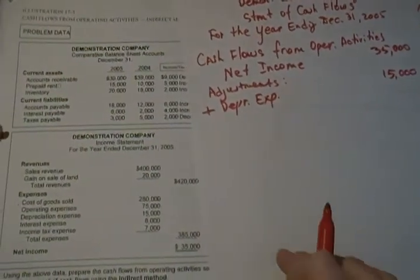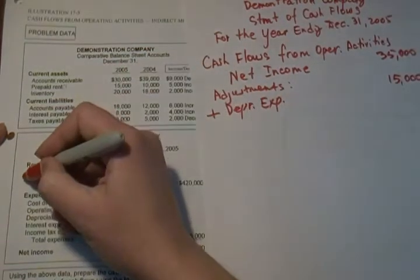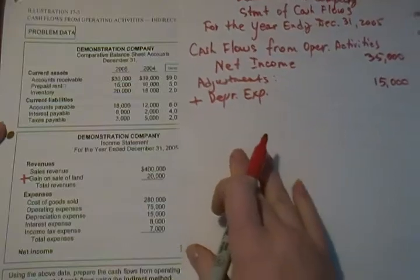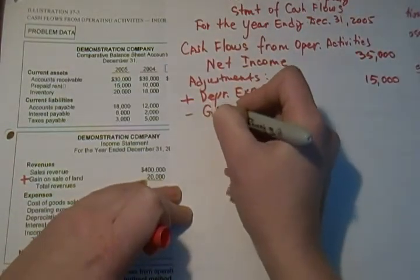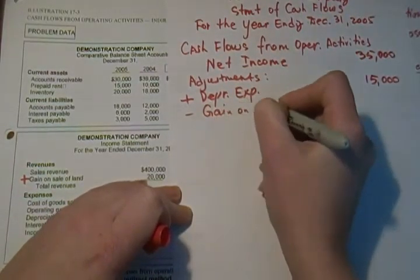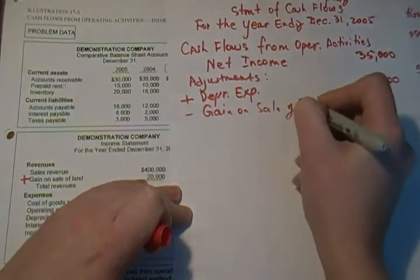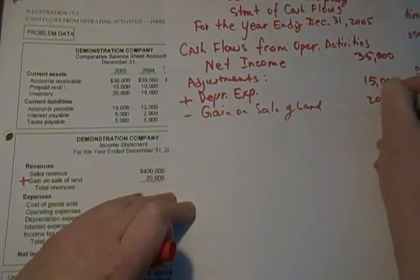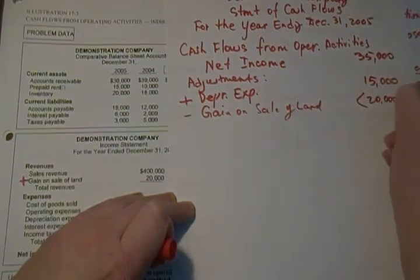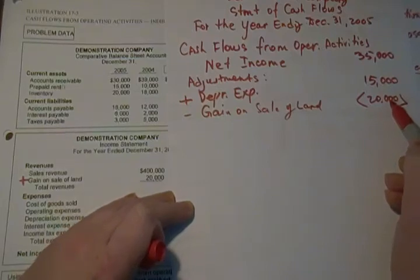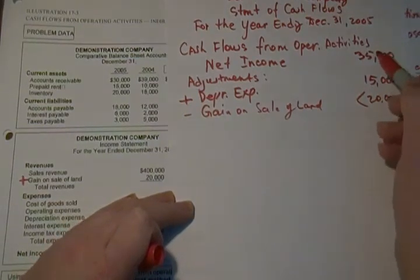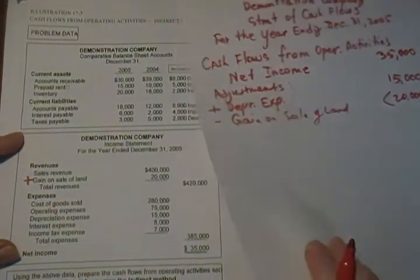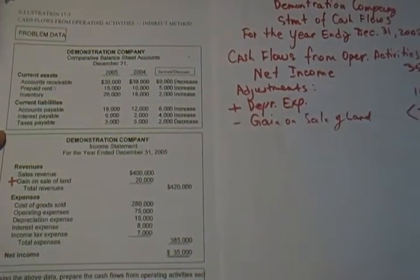The next step is to adjust for your gains or losses. Right here I have a gain on sale of land that was added to arrive at net income — now I'm going to subtract it to neutralize it. Minus gain on sale of land: twenty thousand dollars. I highly recommend putting parentheses so that during an exam you do not accidentally add the whole column. There are no other gains and losses.